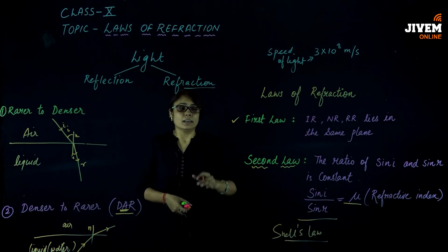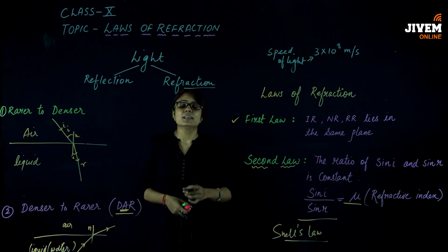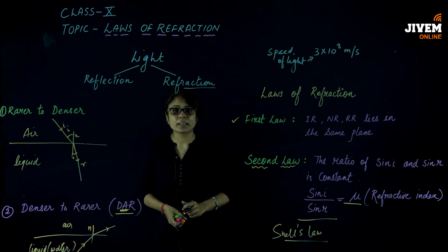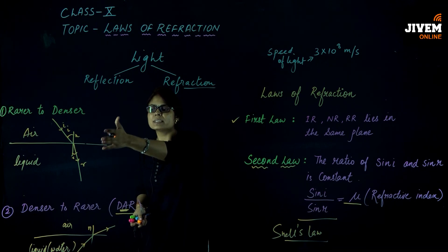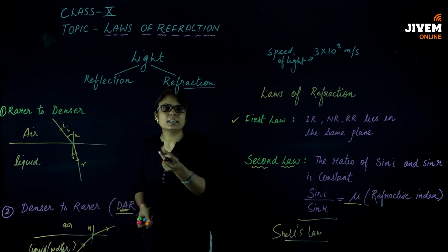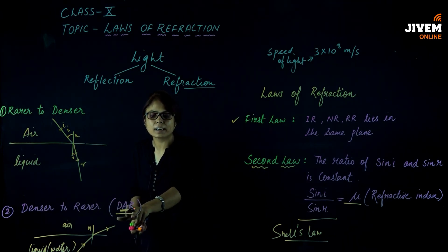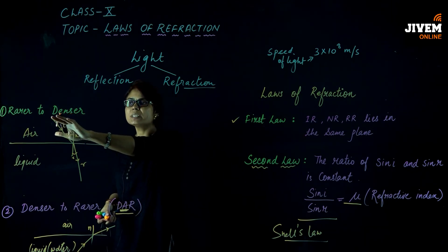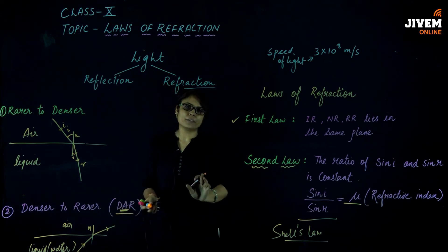Please, if you liked the video, like it, subscribe, and don't forget to press the bell icon. Many students have this doubt — what happens when going rarer to denser, what happens when going denser to rarer. I have explained it in a very easy way: remember DAR — denser to rarer means away from the normal, and rarer to denser means towards the normal.